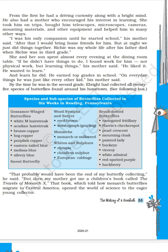The list continues: snout butterfly, wood nymphs and satyrs, eyed brown, wood nymphs and grayling, monarchs, milkweed butterflies, white and sulfurs, Olympia, cloudless sulfur, European cabbage, brush-footed butterflies, variegated fritillary, Harris's checkerspot, pearl crescent, mourning cloak, painted lady, black buckeye, viceroy, white admiral, red-spotted purple, purple hairstreak, hackberry. These are the species and subspecies of butterflies he collected in six weeks around Reading, Pennsylvania.